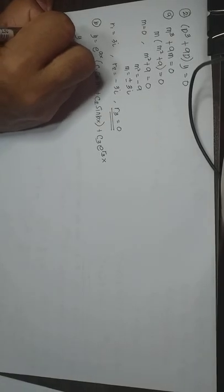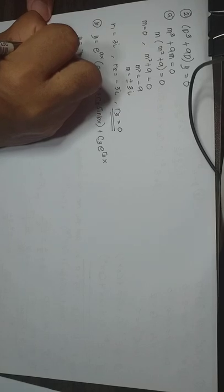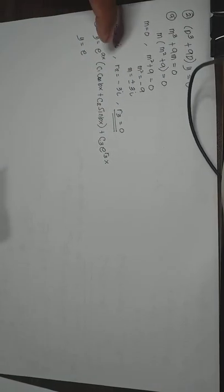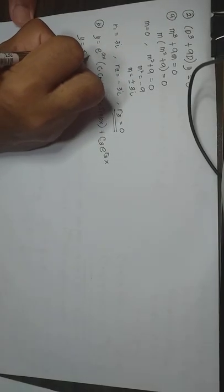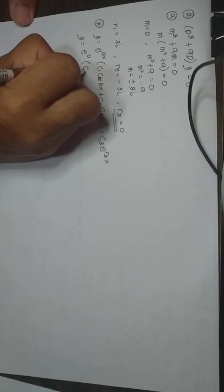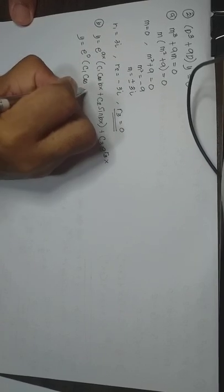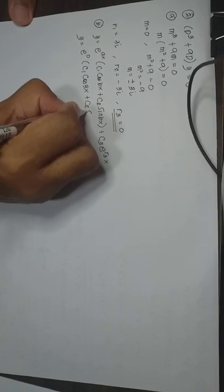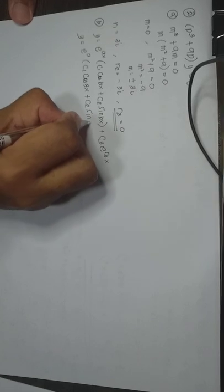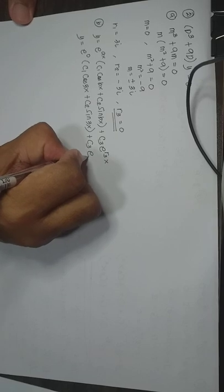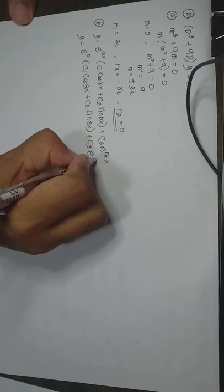We have Y equal to E raised to A, but what is A? Following the form A plus Bi and A minus Bi, your A is 0. So we have times C sub 1 cosine — B is 3 — 3X plus C sub 2 sine of 3X, plus C sub 3 E raised to R sub 3, which is 0.